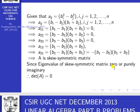Now consider the determinant of A. The determinant of A is the product of the eigenvalues. Since one of the eigenvalues is 0, the product of the eigenvalues must be 0. Therefore the determinant of A must be 0.